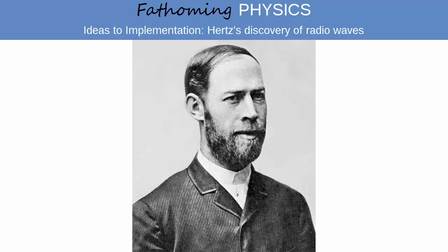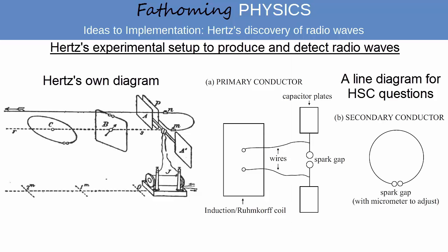In 1888, Heinrich Hertz was the first to successfully produce and detect radio waves, which are electromagnetic waves with a wavelength of several tens of centimetres or longer. To produce radio waves, Hertz used a primary circuit consisting of a spark gap...